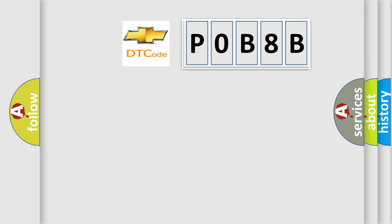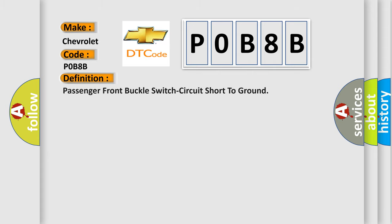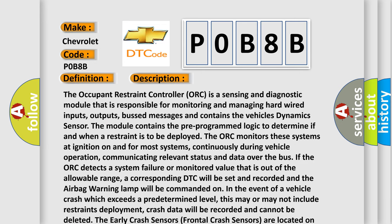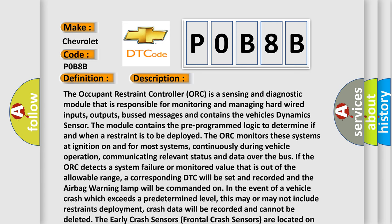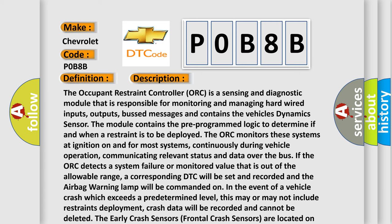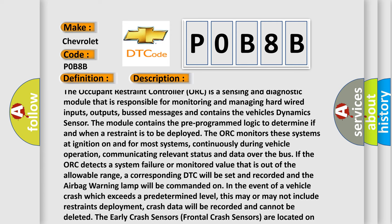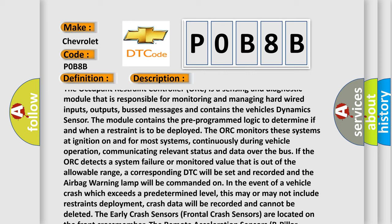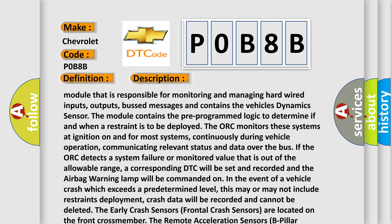So, what does the diagnostic trouble code P0B8B interpret specifically for Chevrolet? The basic definition is: Passenger front buckle switch circuit short to ground. The occupant restraint controller, ORC, is a sensing and diagnostic module responsible for monitoring and managing hardwired inputs, outputs, bus messages, and contains the vehicle's dynamic sensor. The module contains pre-programmed logic to determine if and when a restraint is to be deployed.